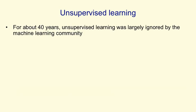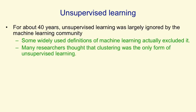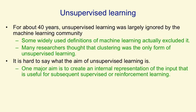Unsupervised learning is going to be covered in the second half of the course. For about 40 years, the machine learning community basically ignored unsupervised learning except for one very limited form called clustering. In fact, they used definitions of machine learning that excluded it, defining machine learning in some textbooks as mapping from inputs to outputs. And many researchers thought that clustering was the only form of unsupervised learning. One reason for this is that it's hard to say what the aim of unsupervised learning is. One major aim is to create an internal representation of the input that is useful for subsequent supervised or reinforcement learning.